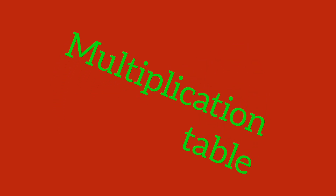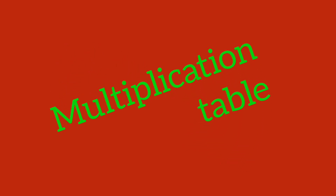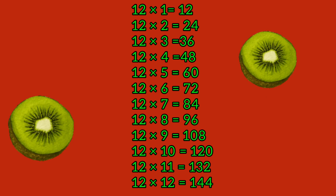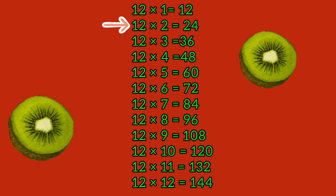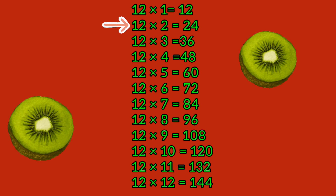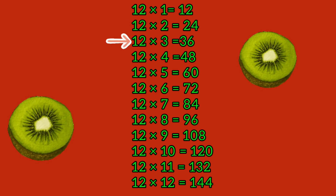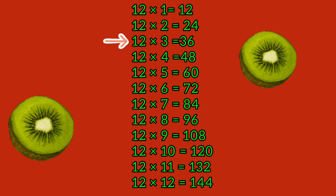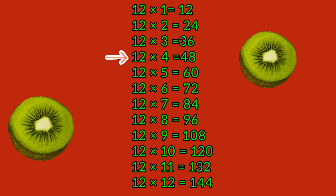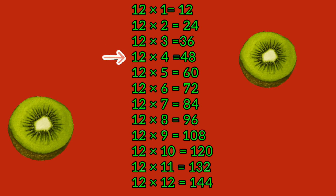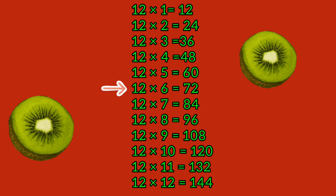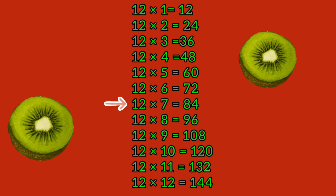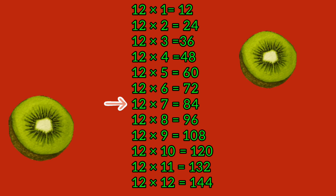Multiplication table, 12 times. 12 times 1 equals 12. 12 times 2 equals 24. 12 times 3 equals 36. 12 times 4 equals 48. 12 times 5 equals 60. 12 times 6 equals 72. 12 times 7 equals 84.